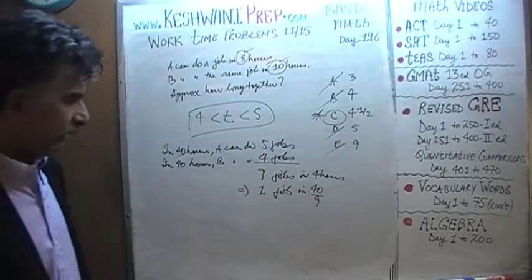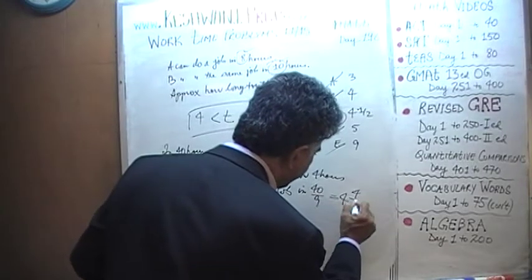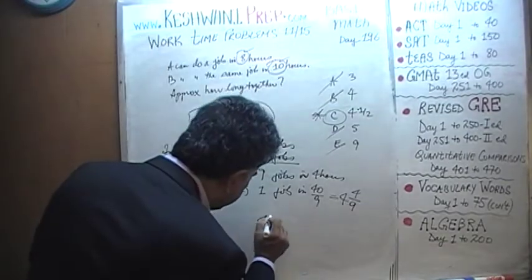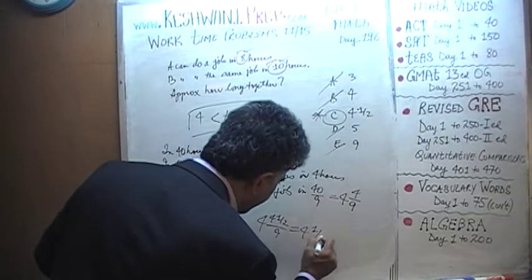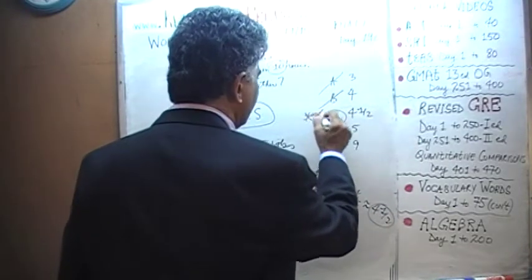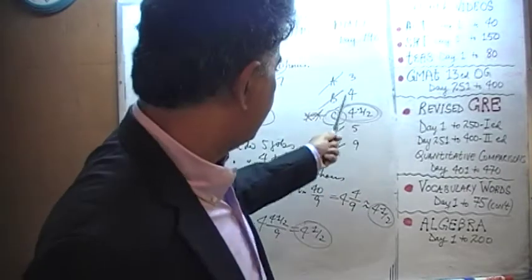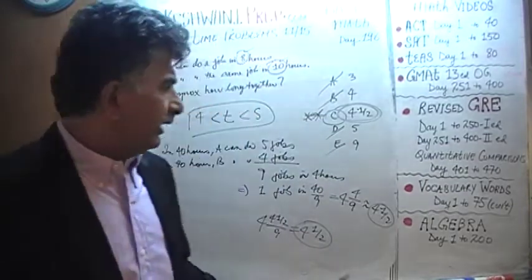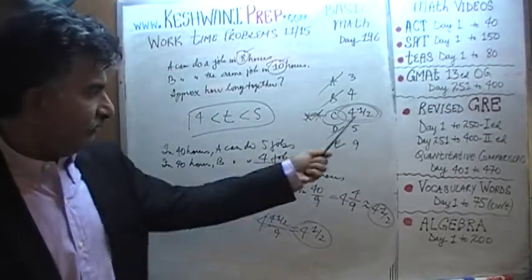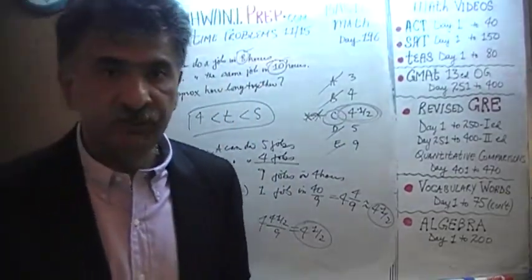How much is 40 over 9? 9 times 4 is 36, so it's 4 with a remainder of 4 — that's 4 and 4/9 hours, approximately 4.5 hours. Just as we said before, it should take approximately 4.5 hours. All the other answer choices are nonsensical: it cannot take as little as 3 or 4 hours, and it cannot take as long as 5 or 9 hours. Simple logical thinking tells us it has to be between 4 and 5 — and all that traditional calculation was, in my opinion, a sheer waste of time.